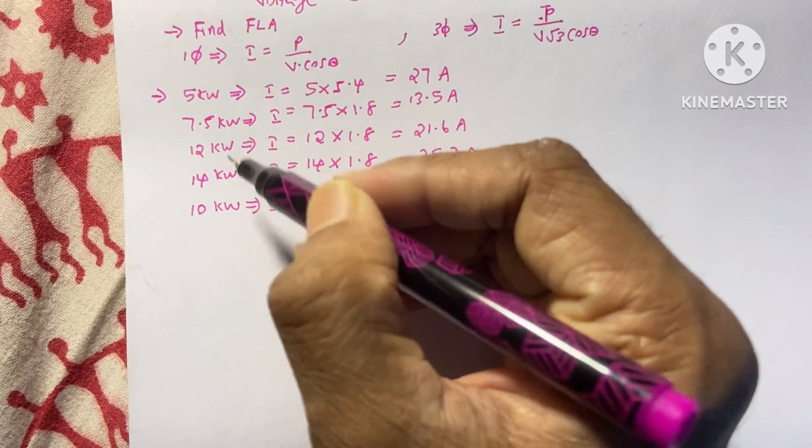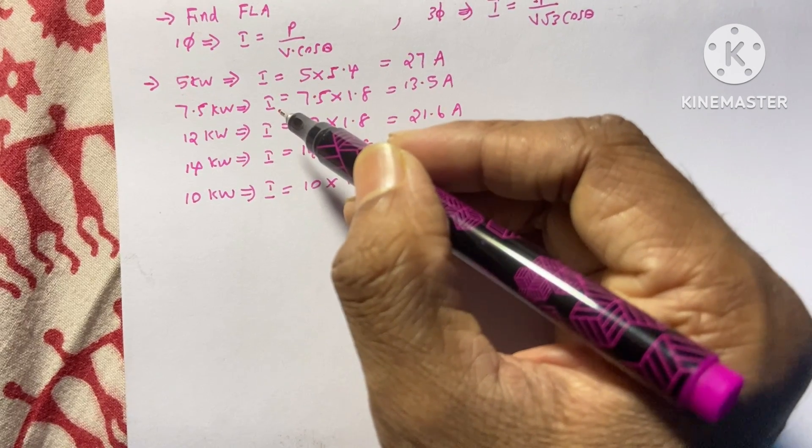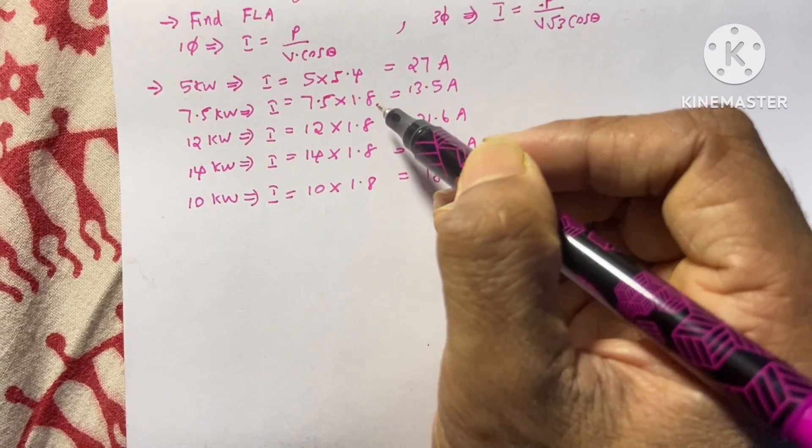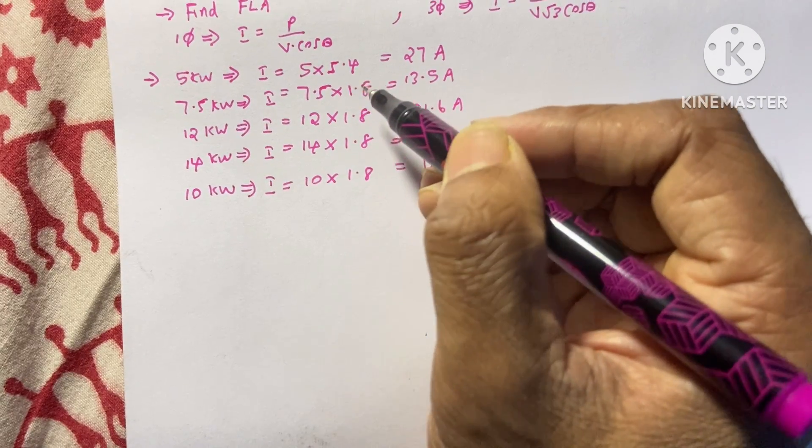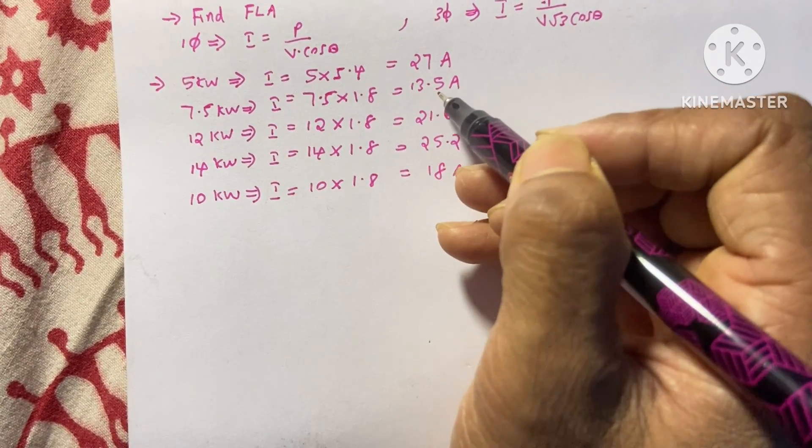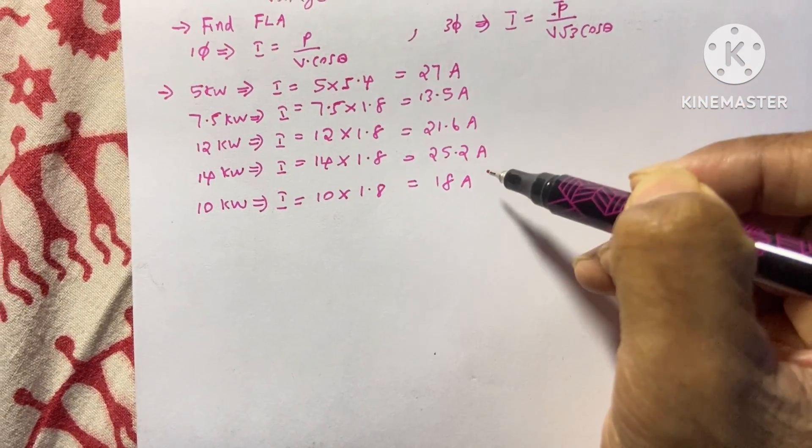And all remaining motors are three phase. For the three phase motor, current I equals 7.5 kilowatt into 1.8. The magic value here is 1.8 for the three phase. So for the first motor, 13.5 ampere. And for the other motors, these are the full load amperes.